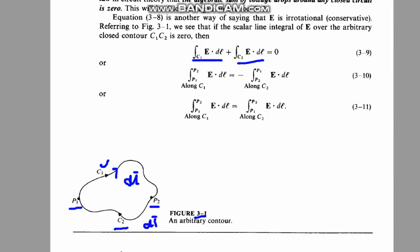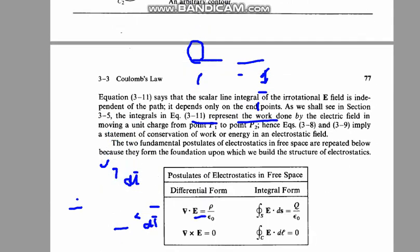So the two integrals are there. This circle denotes the path from P₁ to P₂, and that is P₂ to P₁ along C₂. By introducing a minus sign, you can alter these upper and lower bounds, and you can say the electric field integral from this path and from that path are equal.